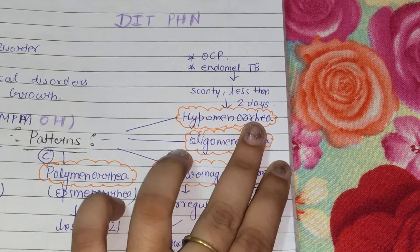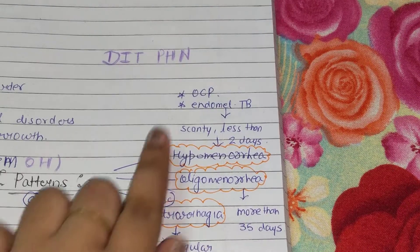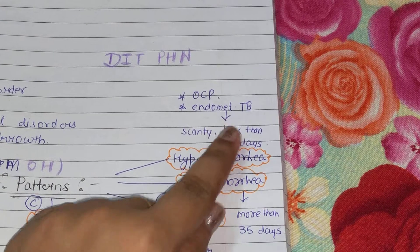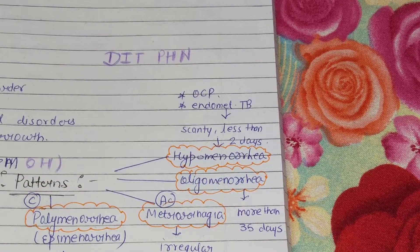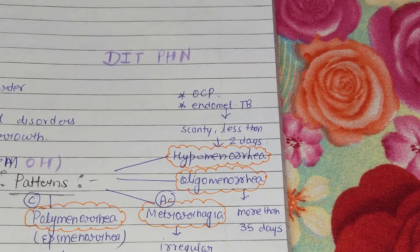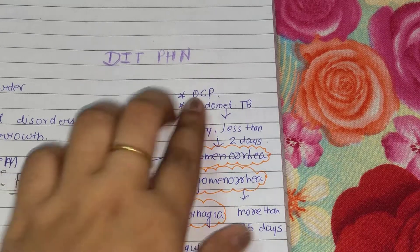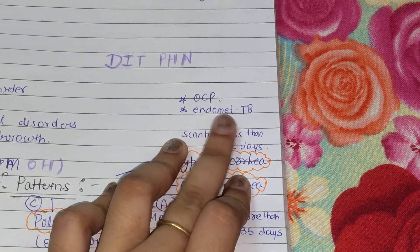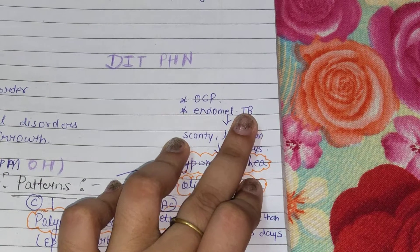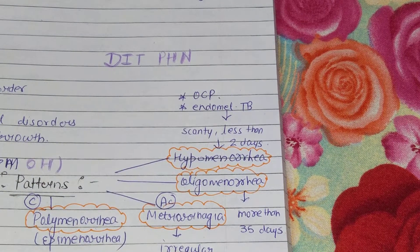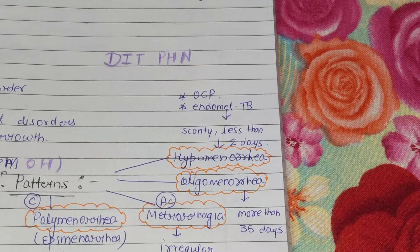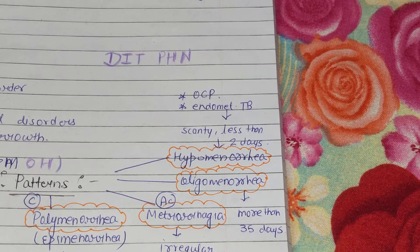Next is Hypomenorrhea. Hypomenorrhea means scanty bleeding — less than 2 days in duration and very scanty flow. The conditions associated with this include endometrial TB or use of oral contraceptive pills.